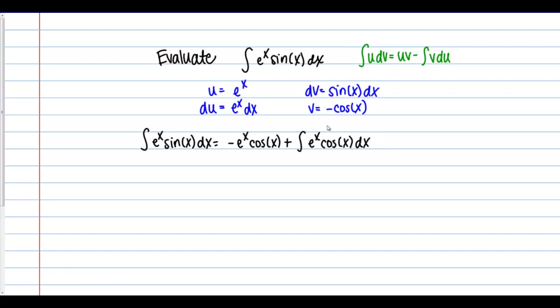Now I have a new expression containing the integral of e to the x cosine of x dx. This is not a simple integral. What we like to see in integration by parts is things getting simpler as we iterate. In this case things haven't gotten simpler, but they haven't gotten more complicated either — I have a very similar expression, just with sine of x replaced by cosine of x. So let's try doing integration by parts one more time to see what happens.